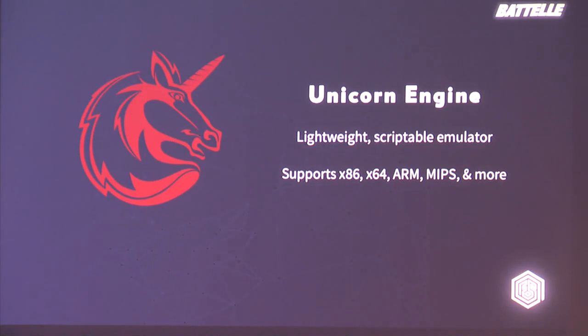Unicorn Engine is a very lightweight scriptable emulator. It's based on QEMU, but it's basically stripped down to be as minimal and thin as possible to the point that all it really does is take the binary code that you give it and execute the instructions one by one with no real hardware support, peripheral, or memory management built in. Other than that, you can map memory in and out as you please.